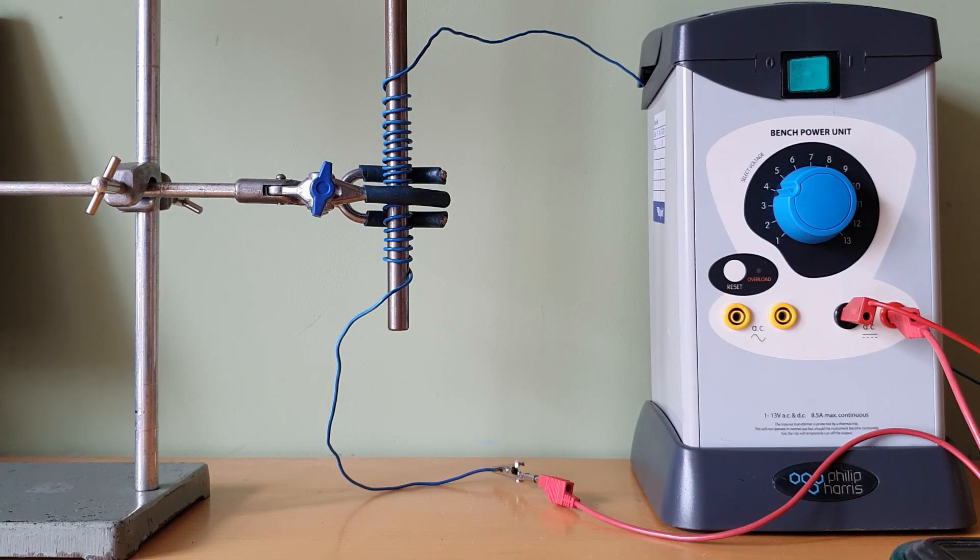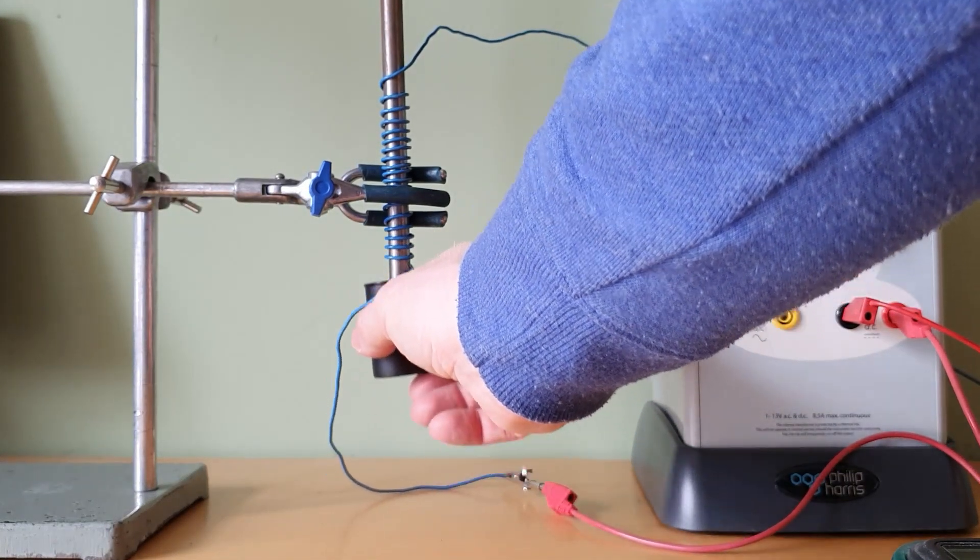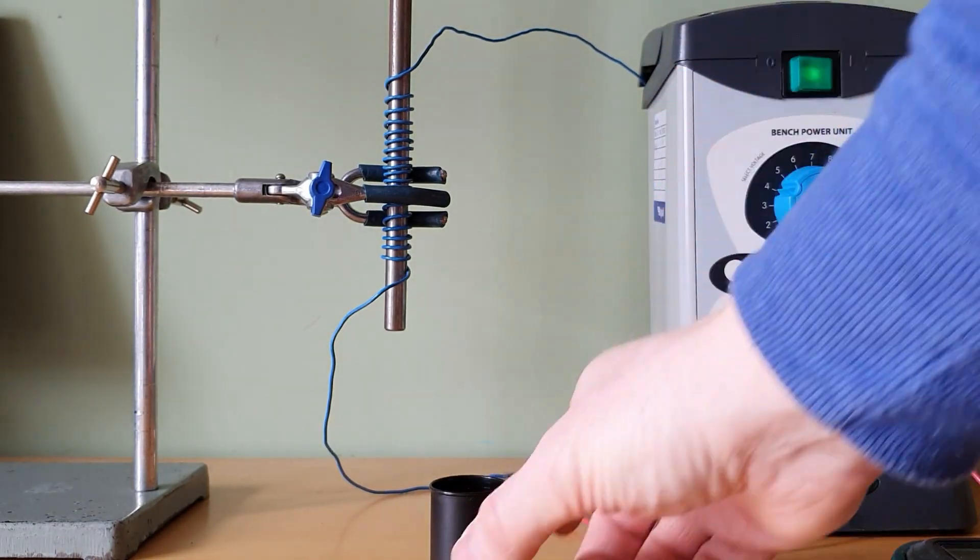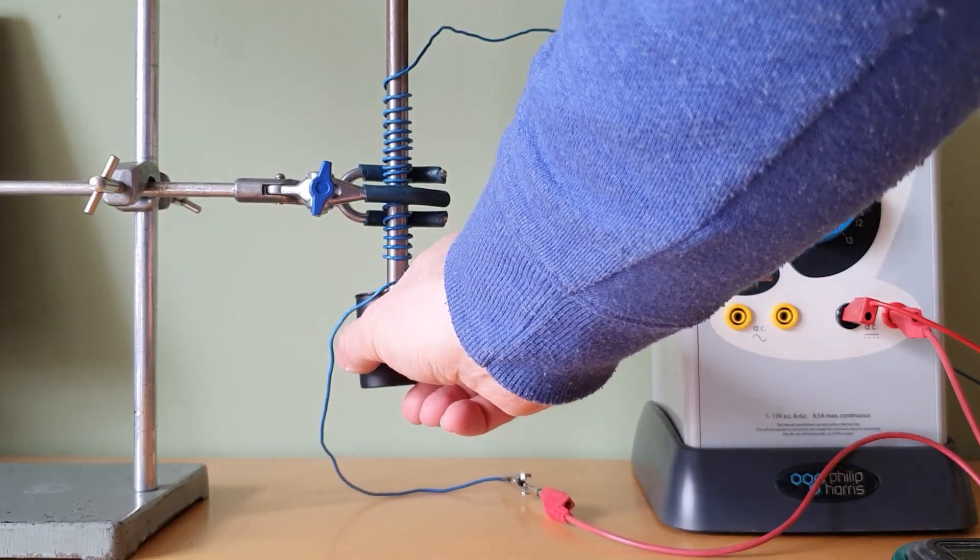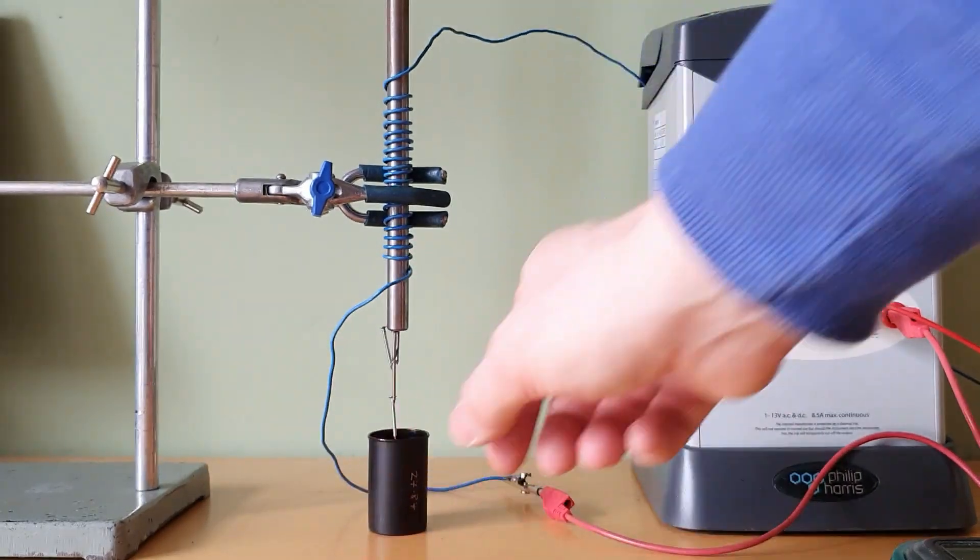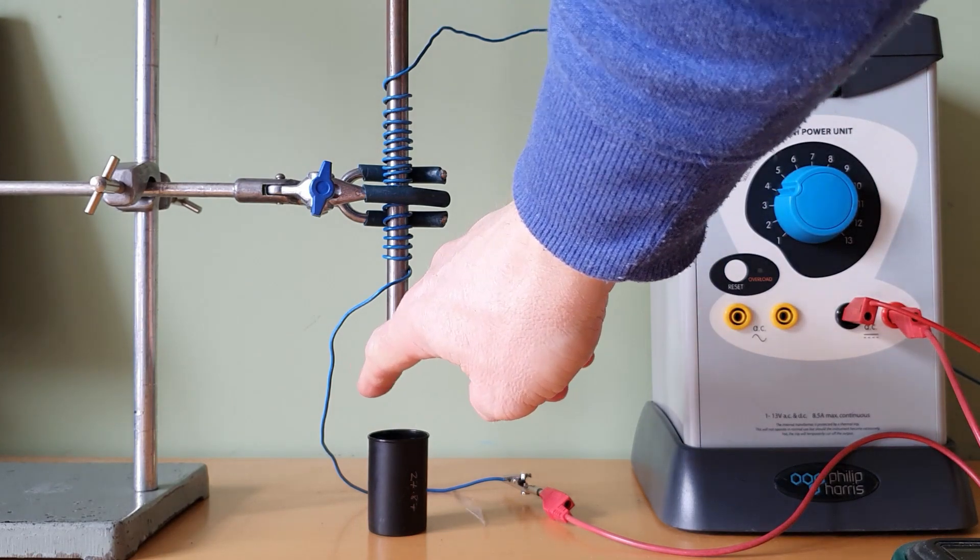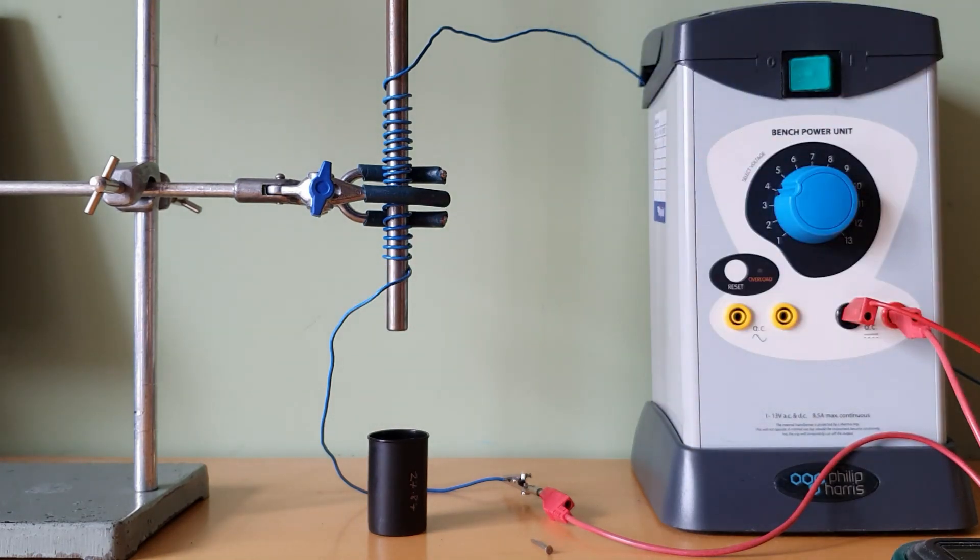So here we can see that the bar is not magnetic. There's some nails in this spot. If I turn on the current, it becomes magnetic and if I turn off the current, the magnetism goes away, not immediately but it goes away.